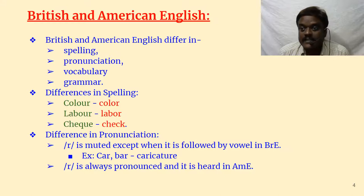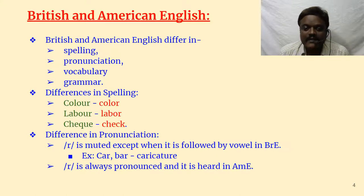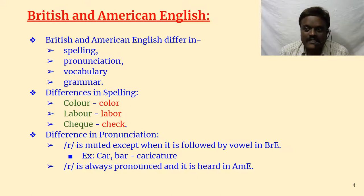Regarding differences in pronunciation: R is muted in British English except when followed by a vowel. For example, we don't say 'car' — Britishers say 'cah'. Whereas Americans say 'car' with the R clearly pronounced. But in 'caricature', there is a vowel after R, so caricature is pronounced the same in both British and American English. R is always pronounced and heard in American English.